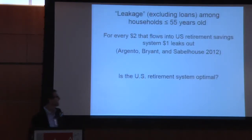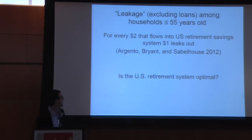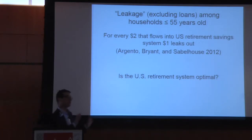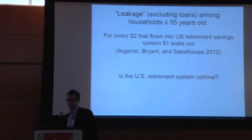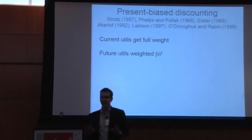Secondly, there's a lot of leakage in the retirement savings system in the US. For every $2 that goes into the system, about $1 leaks out, and this is to households under age 55. So the question I'm going to come back to in the end is: is the US retirement savings system optimal?